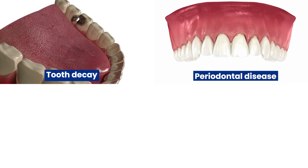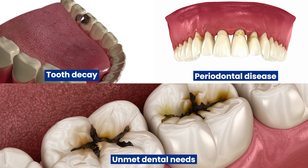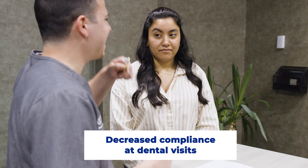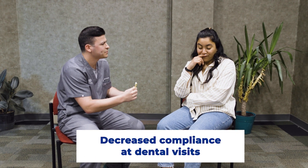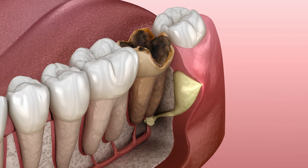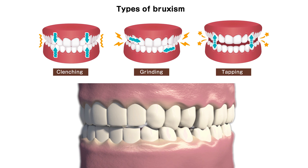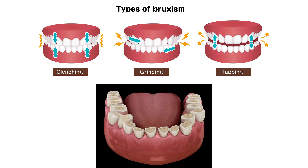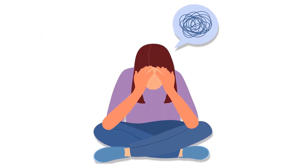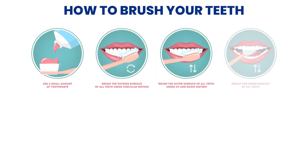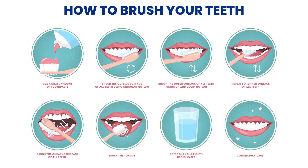Behavioral challenges place people with ASD at higher risk for tooth decay, gum disease, and unmet dental needs if they prevent consistent and complete oral home care routines. These challenges can also lead to decreased compliance at dental visits and contribute to access to care issues. In addition, people with ASD may be at higher risk for oral trauma, either from chronic poor oral habits such as grinding their teeth or chewing on non-nutritive objects, or from more acute trauma injuries related to dysregulated emotional behavior such as self-injury. Considering these challenges, prevention is essential.